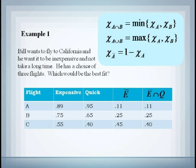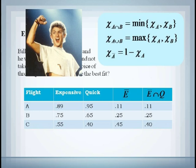Using our fuzzy operations and these membership values, we can see how much each flight belongs to the fuzzy set, fast and not expensive. In this case, it appears, barring any other restrictions, that flight C has the highest membership value and is therefore the best choice for Bill.